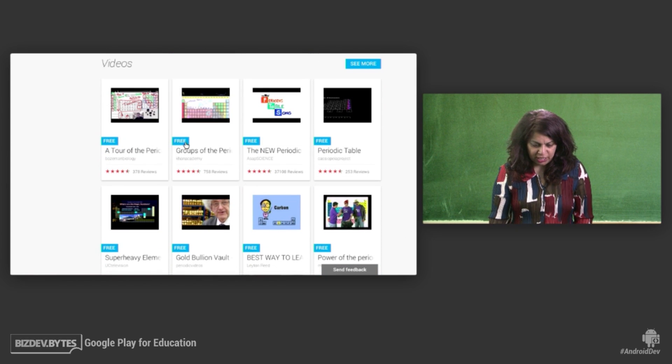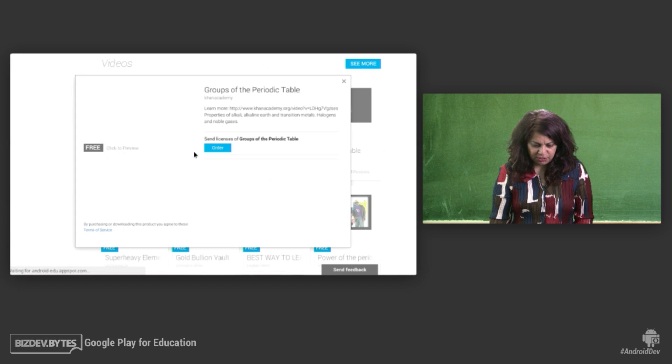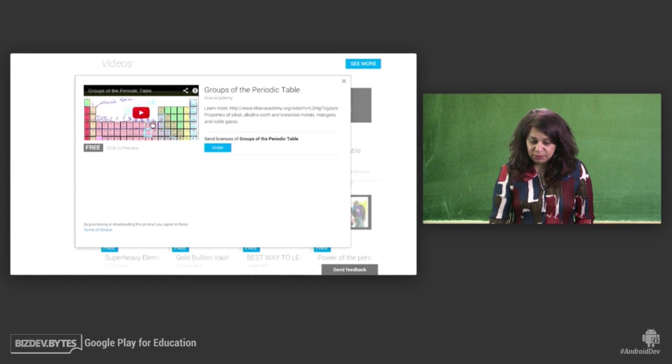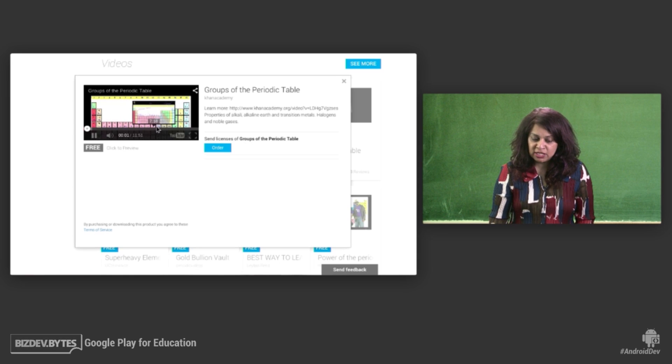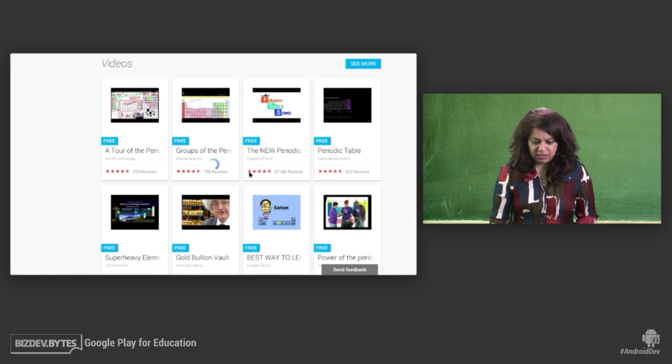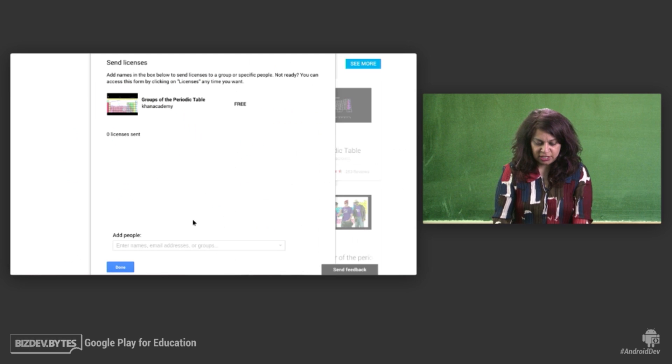So I want to check out this Khan Academy video on the periodic table. And I'm able to look at it right there within Google Play for Education to determine whether or not it's something that I'd want to send to students. And it is and great, I'm able to order it. And again, having set up the chemistry club group at my school earlier, with one click, I'm able to send it to specifically those devices.